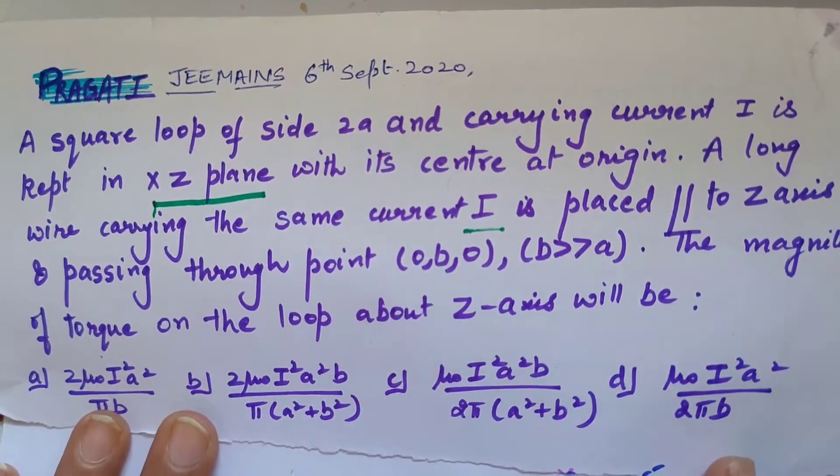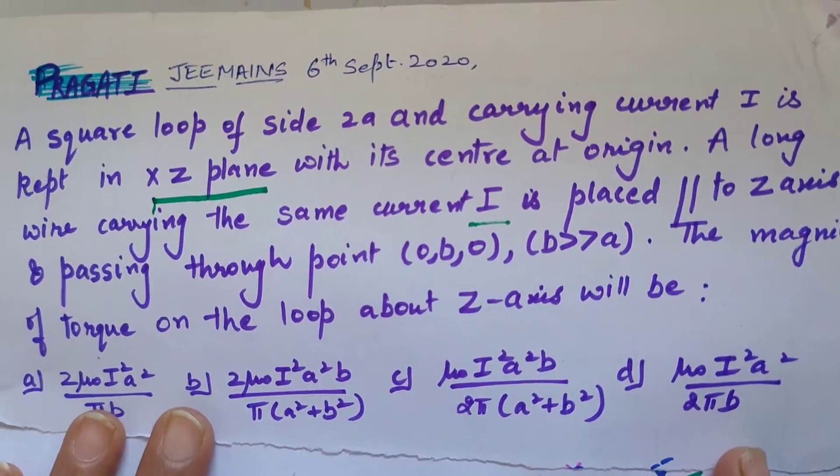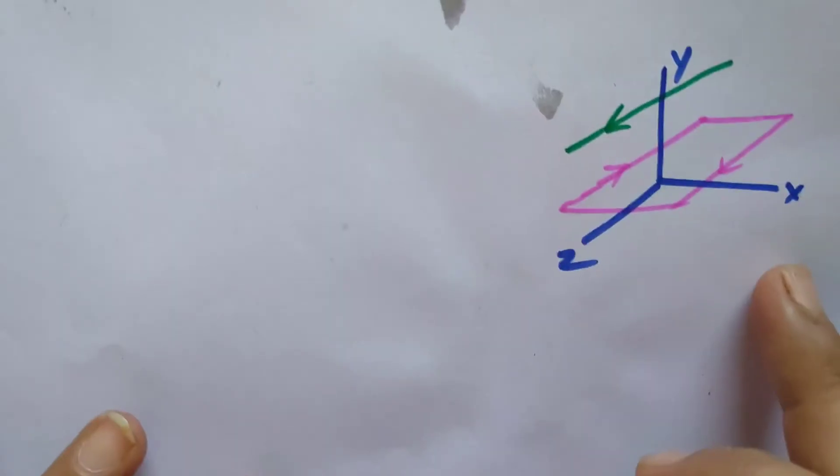The magnitude of the torque on loop about z-axis would be... So this is the question and these are the options for it. Let's figure out what should be the answer.